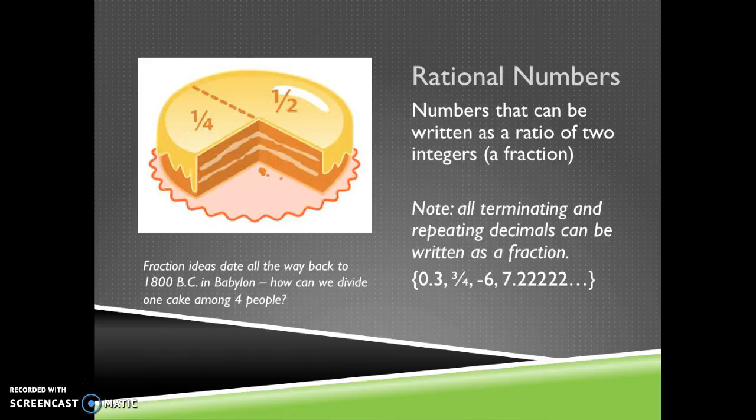A special thing to note is every single decimal that can be written terminating, which means it ends, or repeating, like 7.6161616161, can be written as a fraction. And here are some examples. 0.334, negative 6, 7.22222. These are all rational numbers.